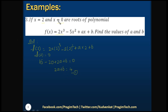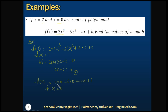Now substituting x = 0 in the polynomial: f(0) = 2(0) - 5(0) + A(0) + B, and since x = 0 is a root, f(0) = 0. All terms with x become 0, so the only remaining term is B. Therefore B = 0. Let's name this as equation 2.